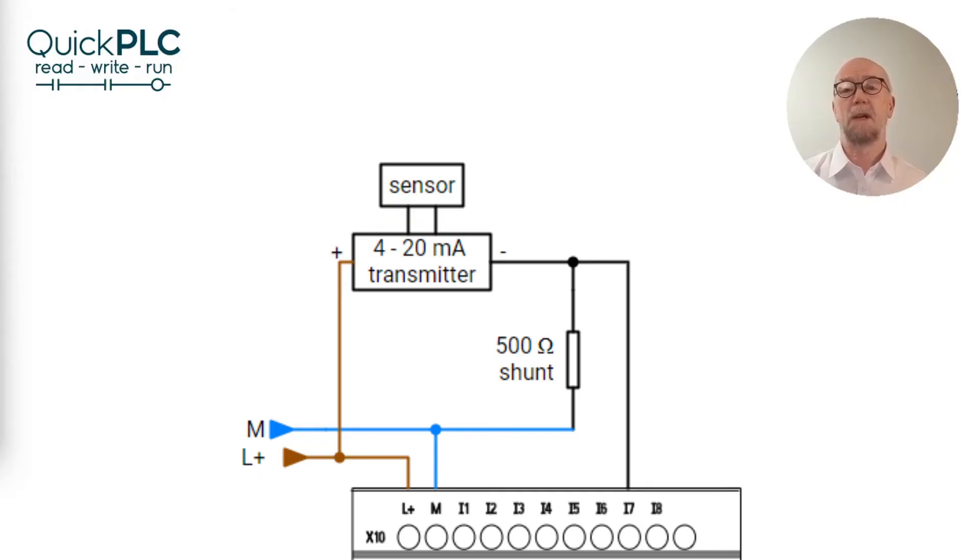Be aware that a loop powered transmitter requires a minimum voltage across its two terminals for it to operate correctly. At 20 milliamps we're going to drop 10 volts on the 500 ohm shunt leaving only 14 volt for the sensor on a 24 volt power supply. This should be fine for most sensors but if you need a few more volts then consider using a 250 ohm shunt if you can tolerate the loss of resolution with a 1 to 5 volt input rather than 2 to 10 volt.